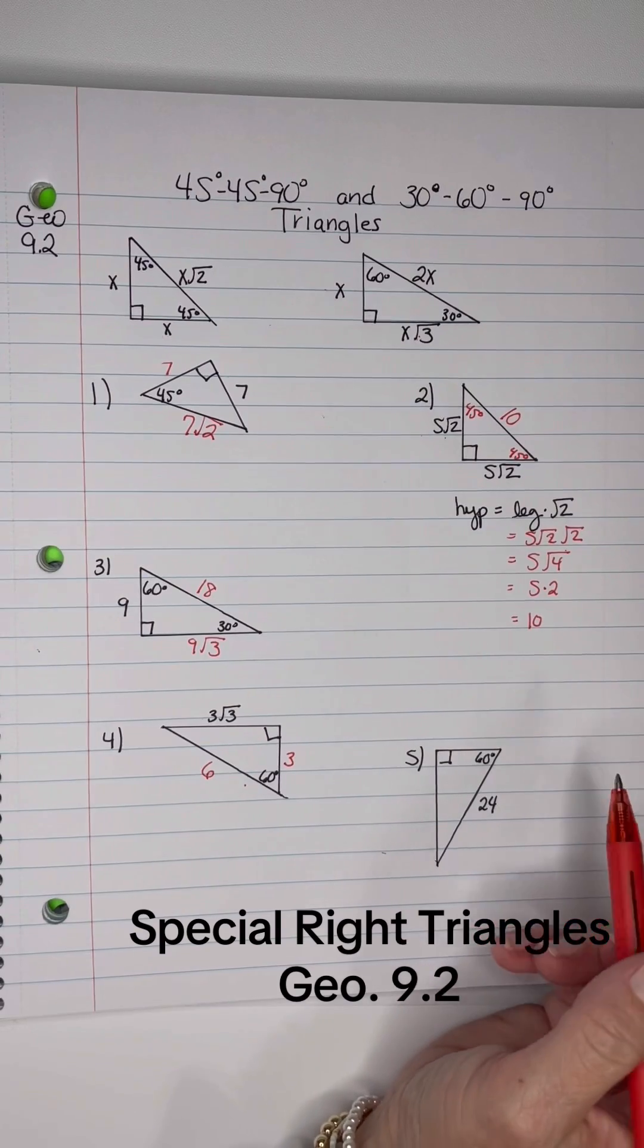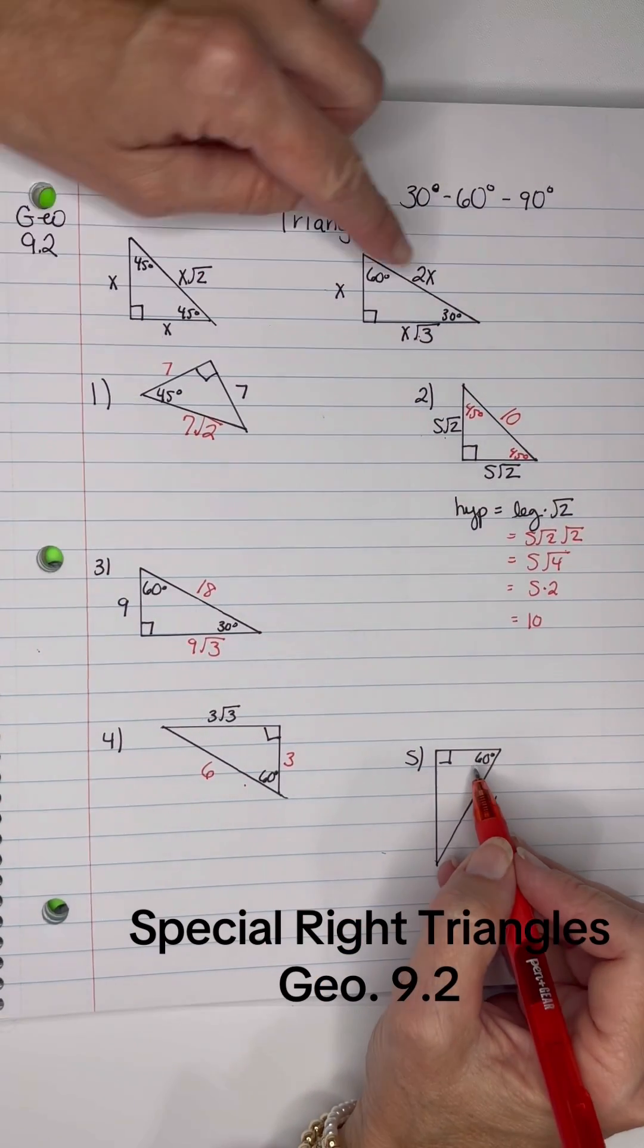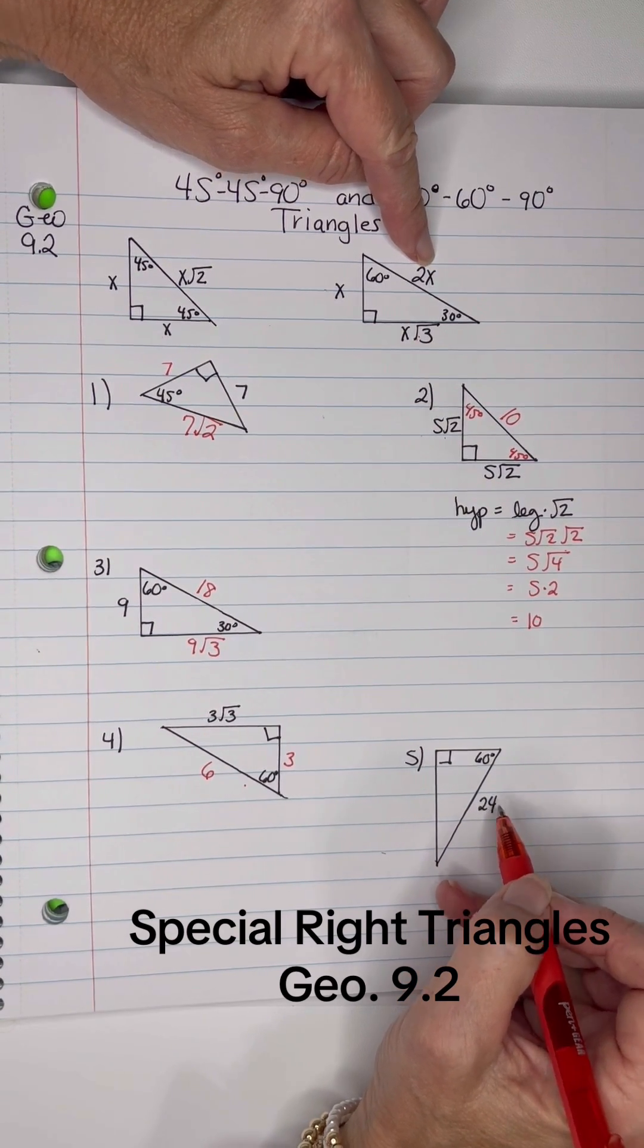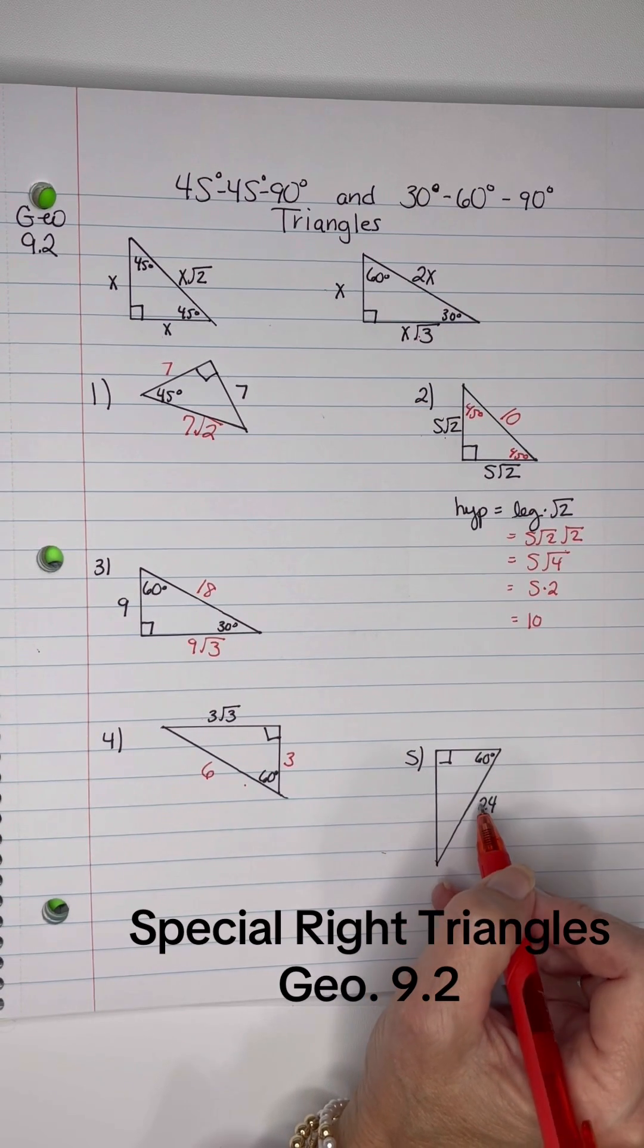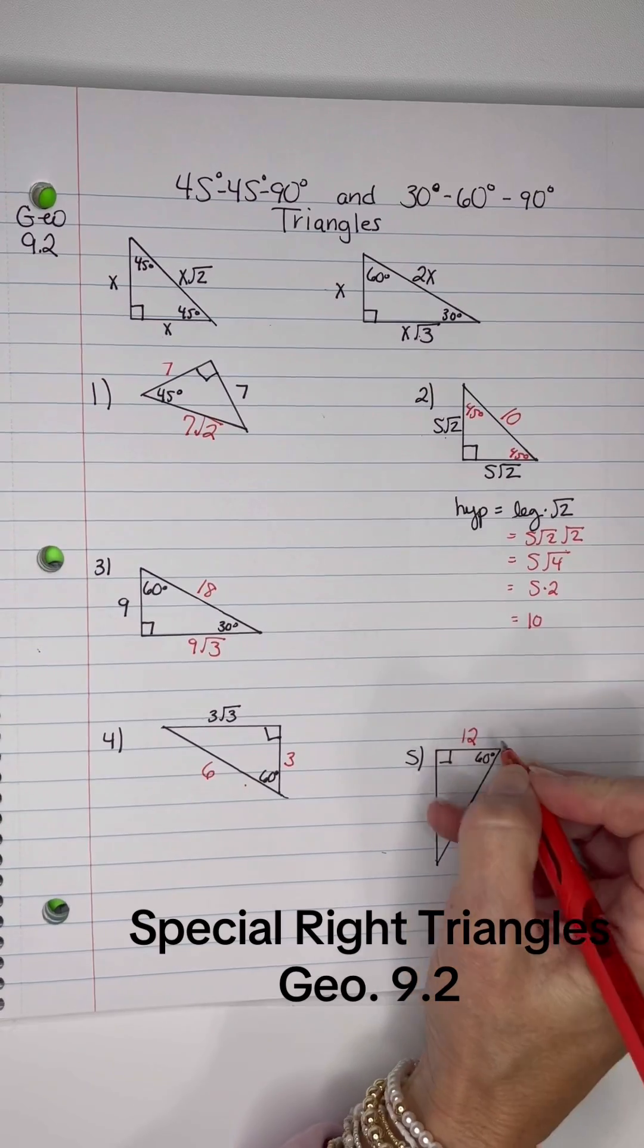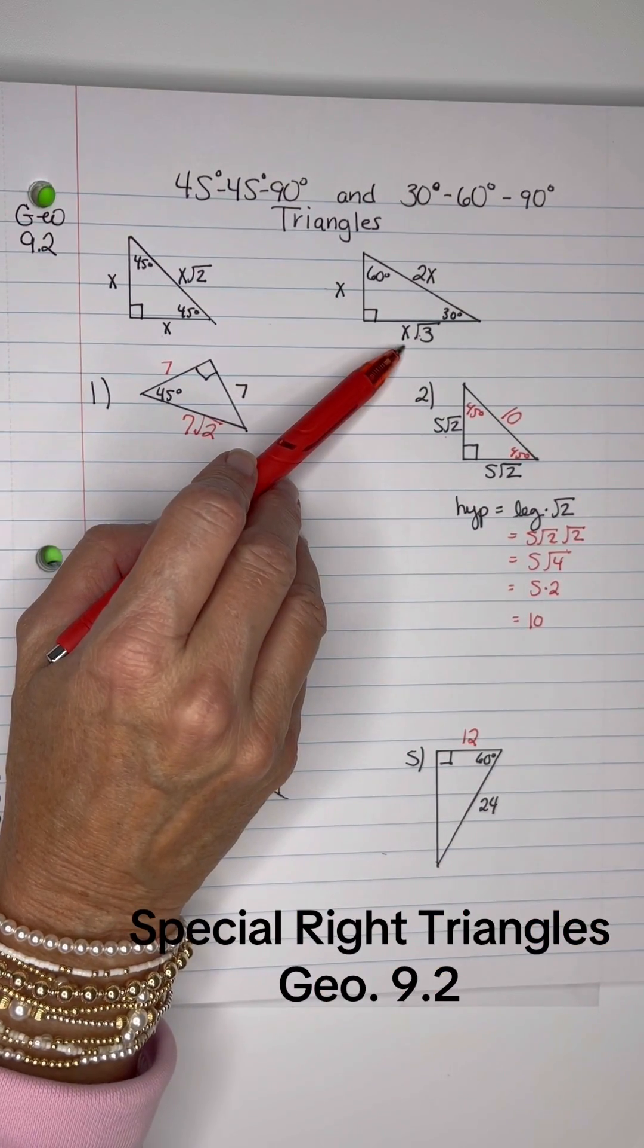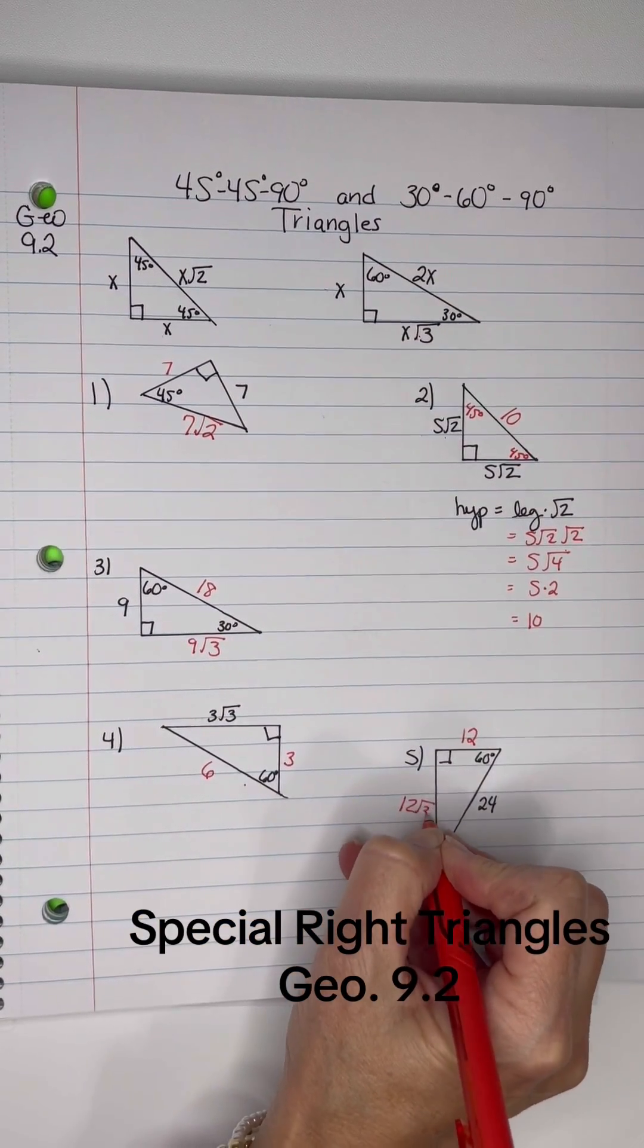And then on this last one, I have a 24 on the hypotenuse of a 30-60-90. So that's 24. It's twice as big as the leg, so take 24 and divide it by 2, and you get 12. And then you know that when you have the short leg, you can get the longer leg by multiplying it by root 3. So that will be 12 root 3.